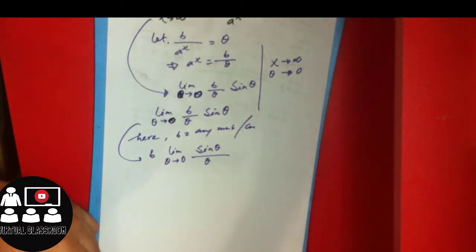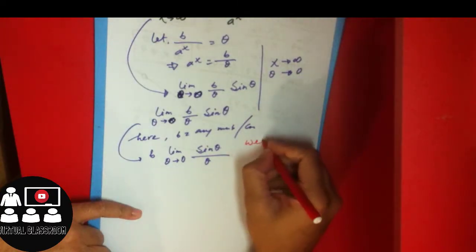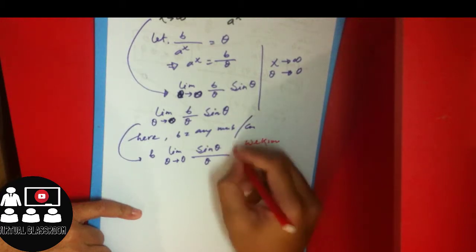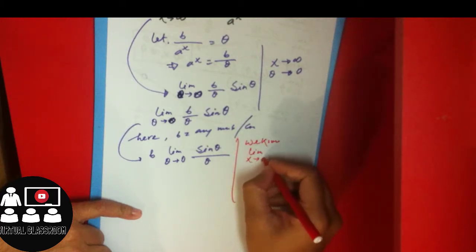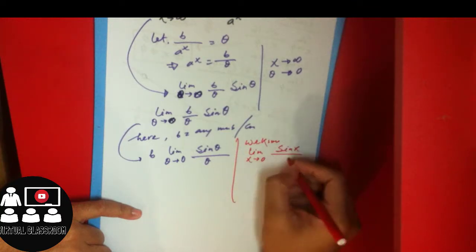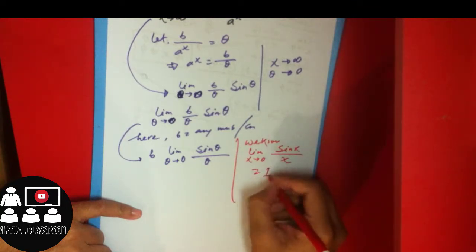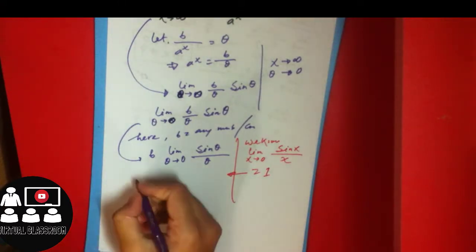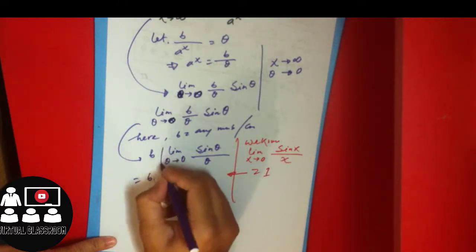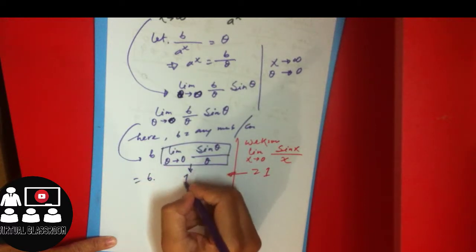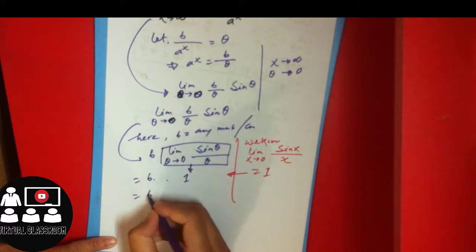We know the standard result: limit as x approaches 0 of sin(x) divided by x equals 1. Applying this here, we get b into 1, which equals b. So the final answer is b.